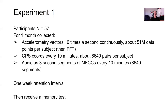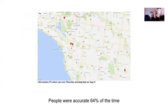In our first experiment, we had 57 participants. We collected accelerometry at 10 times a second continuously for one month, leading to about 51 million data points per participant. We had GPS coordinates every 10 minutes, so about 8,640 pairs per subject. And we had short audio segments collected as mel frequency cepstral coefficients every 10 minutes — kept short to avoid recording people's conversations and compromising their privacy.